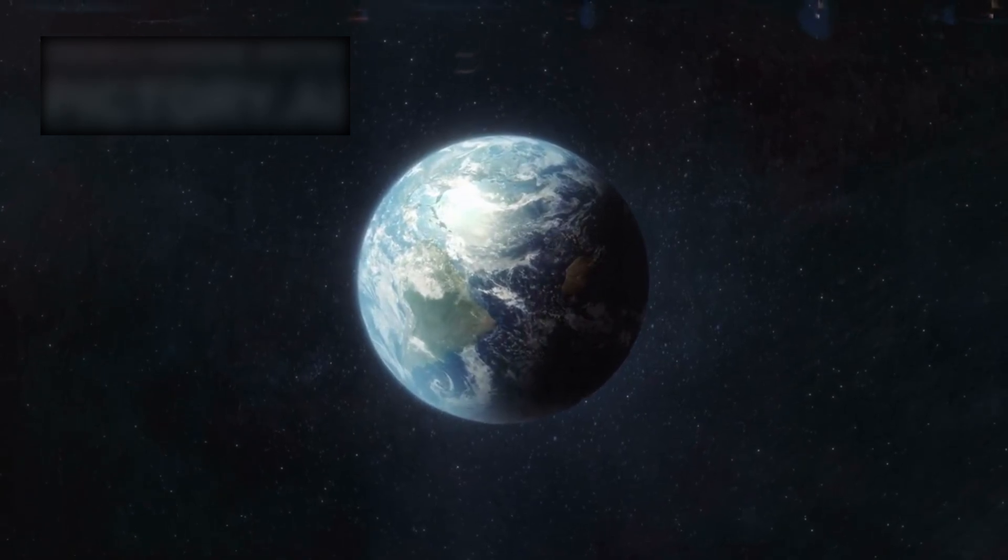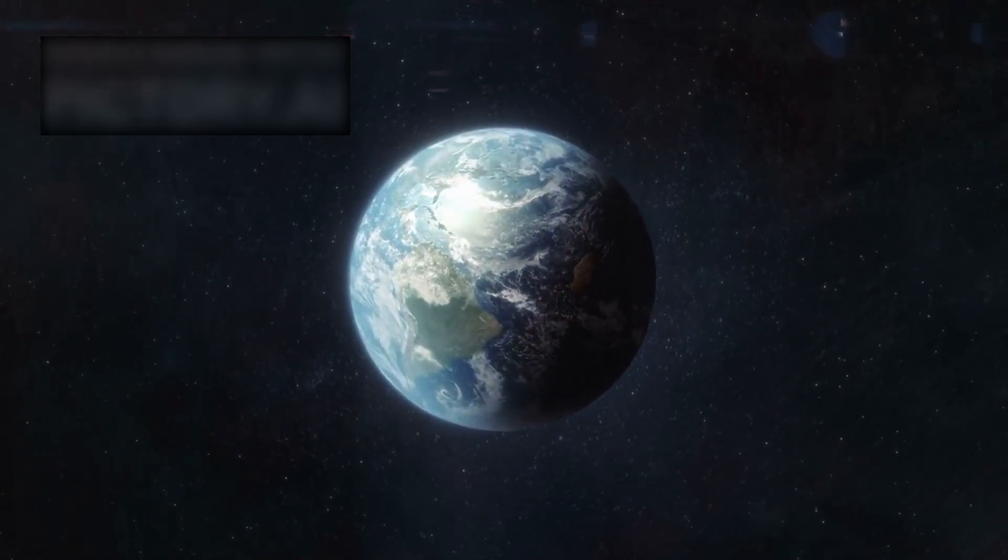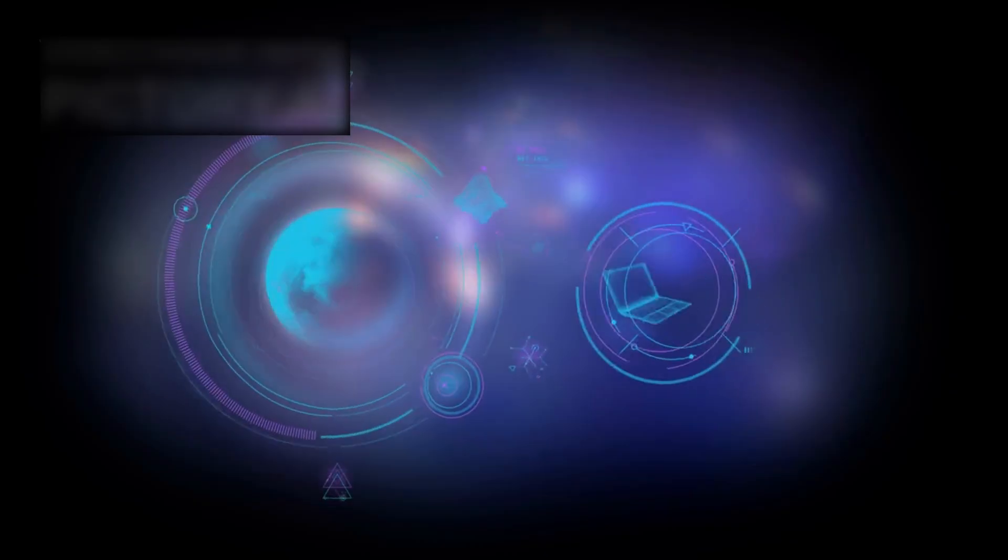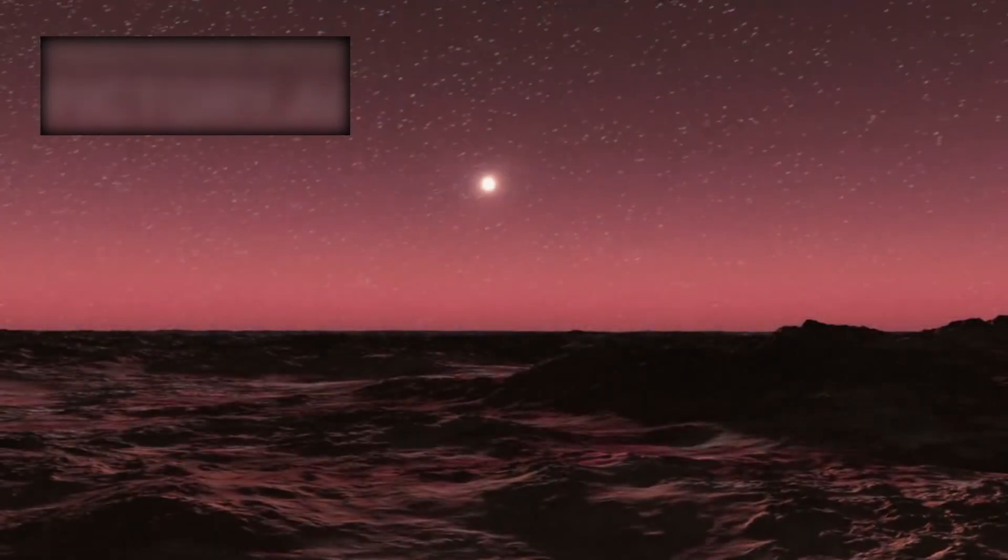To put this into perspective, let's imagine travel at familiar speeds. Driving around Earth's equator at 70 miles per hour would take just about 15 days. Reaching the Moon at that same speed: roughly five months.